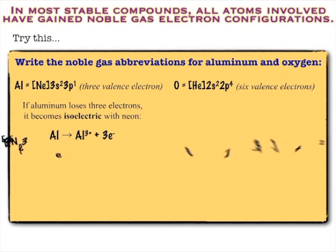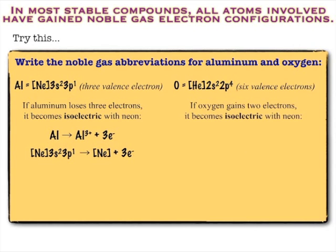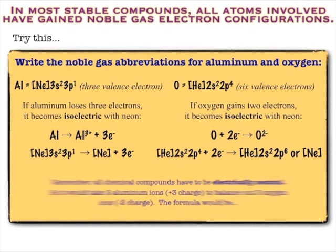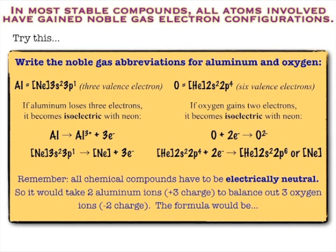So aluminum is going to want to lose three electrons to become isoelectric with neon. We can look at that in terms of the electron configuration. Stripping those away gives it neon's electron configuration. Oxygen is going to want to gain two to become isoelectric with neon from the other side. So that will be helium 2s2, 2p6, which again would be eight electrons in the valence shell. And so we're dealing with the fact that aluminum has a plus three charge, oxygen has a negative two charge. And so you'd need two positive three charges to balance out three negative two charges. And so that formula would be Al2O3.